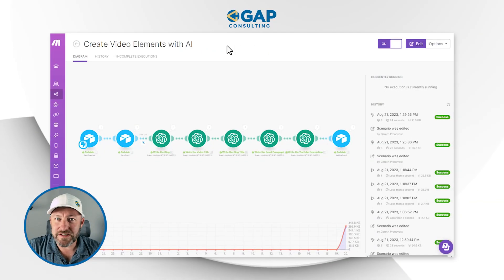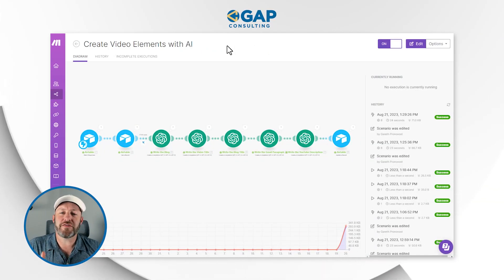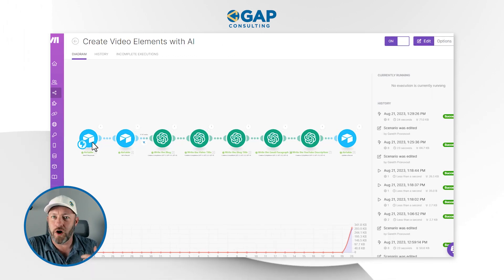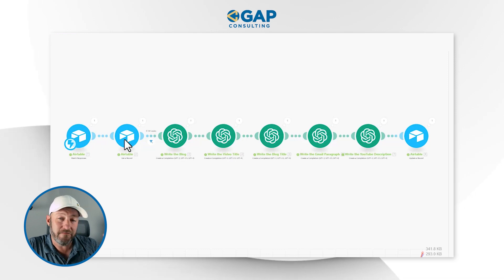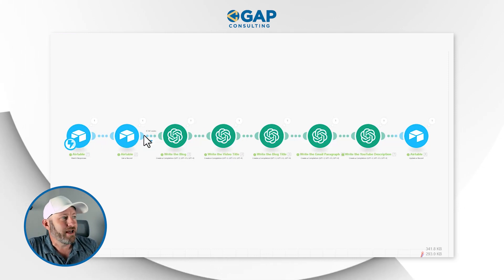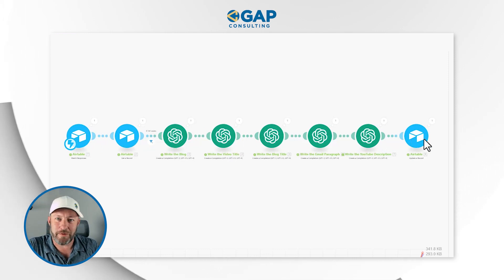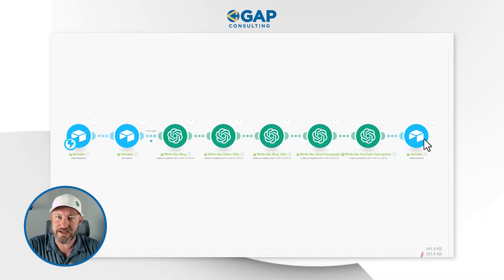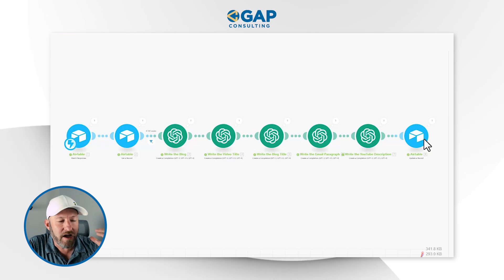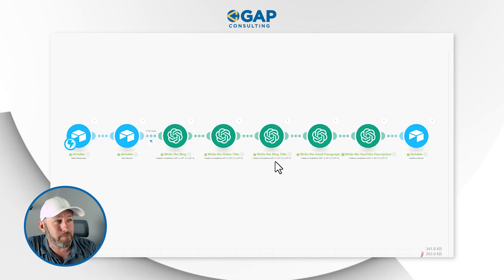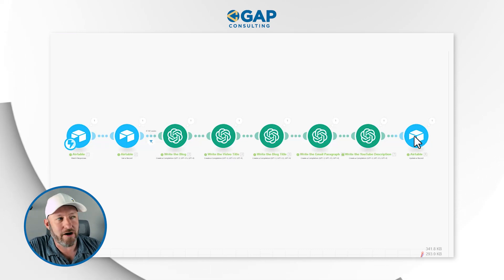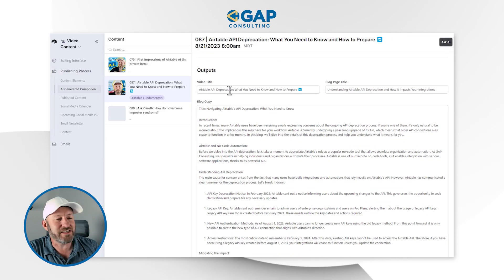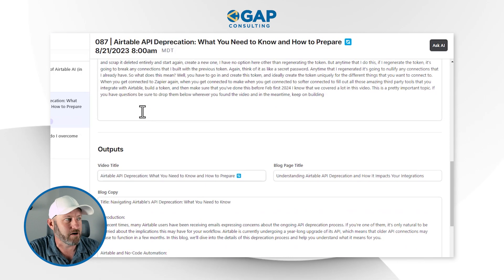All of this is being run in the background thanks to this automation in make.com. This particular automation works by pushing a button in Airtable, finding information about that record, and then performing all of those little pieces — all of those different prompts where we're asking ChatGPT to give us that output back. Then we take all of those outputs and stuff them right back into Airtable. If we flip back into our interface, you're going to see all of that information now filled out.